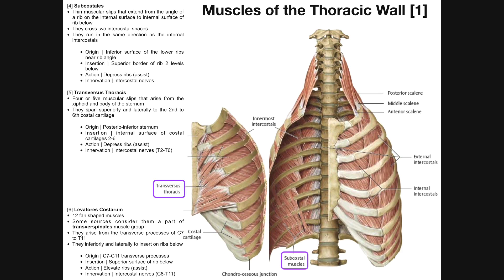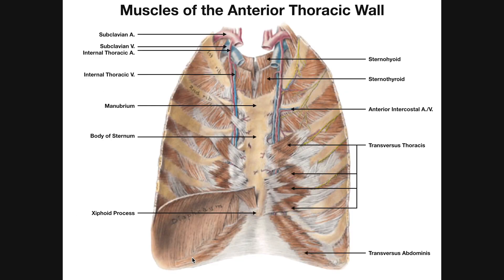We can take another look at the transversus thoracis muscle in this view. They've pulled off the anterior chest wall. Here's the sternum — we can see its posterior aspect. Up here is the manubrium, here's the body, and down here is the xiphoid process. We can see the muscular slips of the transversus thoracis. They originate on the lower half of the sternum down to the xiphoid and rise superiorly and laterally to insert on the costal cartilages of ribs two through six.